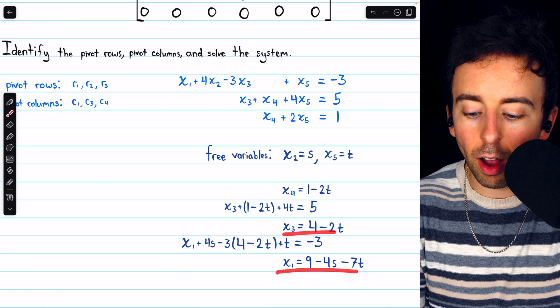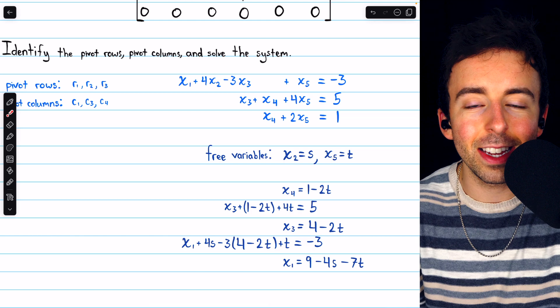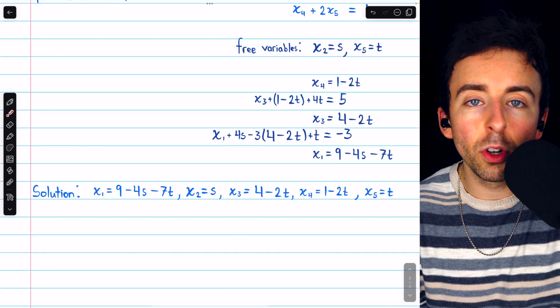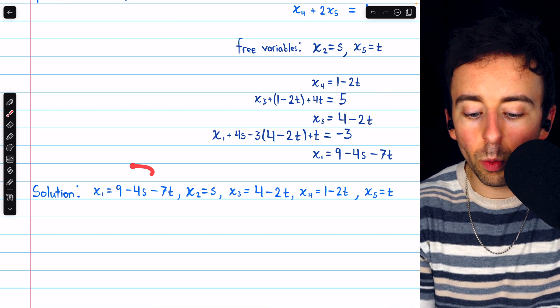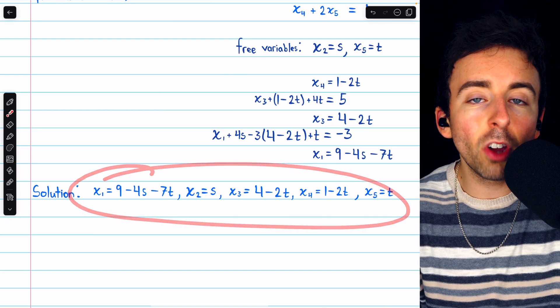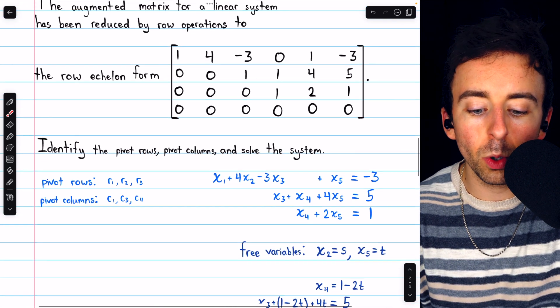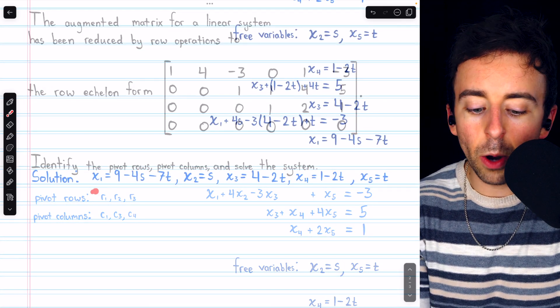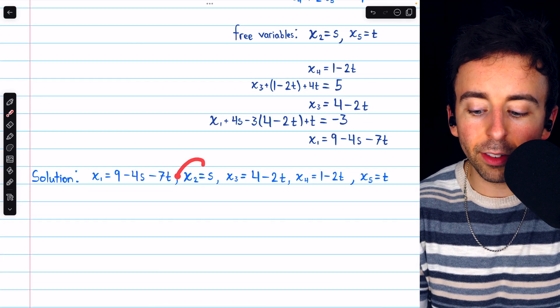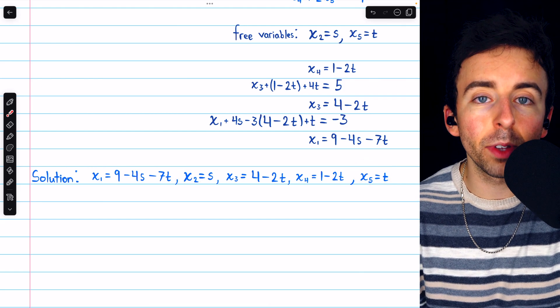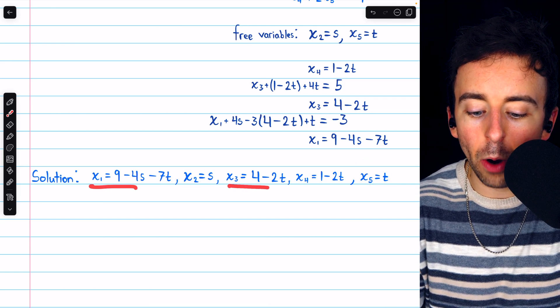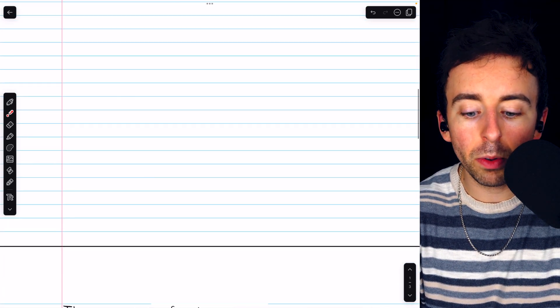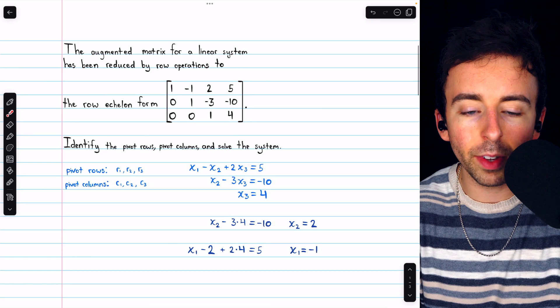Now, we have every variable solved for in terms of the parameters s and t, and thus we can completely describe the infinite solution set. So any 5-tuple, x1, x2, x3, x4, x5, with this form is going to be a solution to the linear system whose augmented matrix was reduced to this row echelon form. Note that with this solution set, x2 and x5 as the free variables can be whatever they like, and then the other variables are calculated accordingly. So that's how to use row echelon form to identify pivot rows and pivot columns, and to finish solving a linear system.